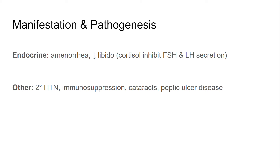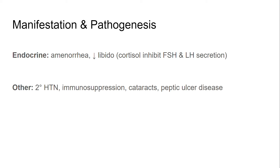Next are the endocrine manifestations. We can see amenorrhea and decreased libido because cortisol inhibits FSH and LH secretion, leading to relative hypogonadism. Other symptoms include secondary hypertension — cortisol is a stress hormone that triggers vasoconstriction, leading to elevated blood pressure. There is also immunosuppression: cortisol affects many immune cells, especially neutrophils, decreasing neutrophil marginalization and extravasation into tissues. Therefore, we see neutrophilia in Cushing syndrome because neutrophils cannot leave the vessels. Additionally, cataracts and peptic ulcer disease can occur.